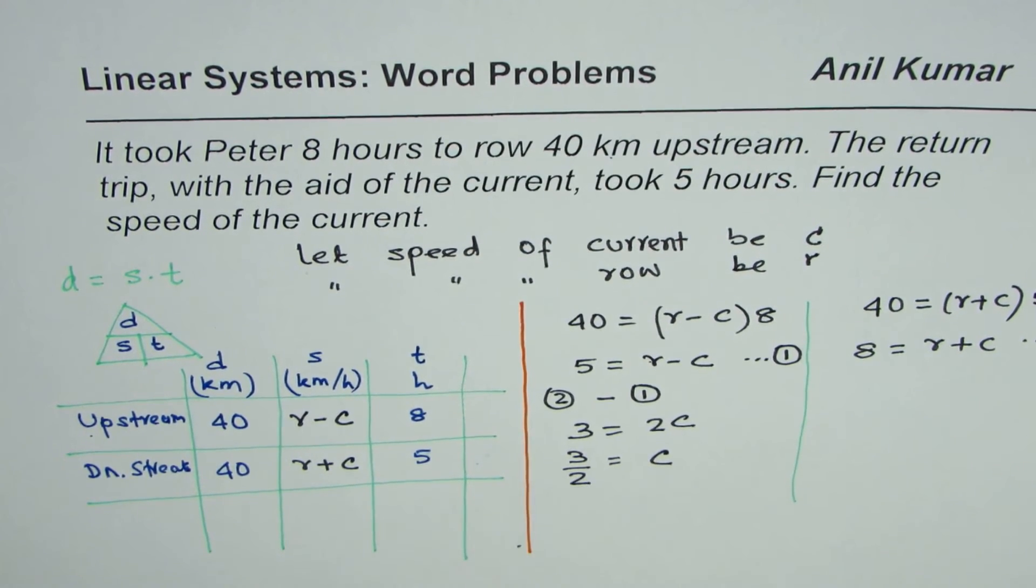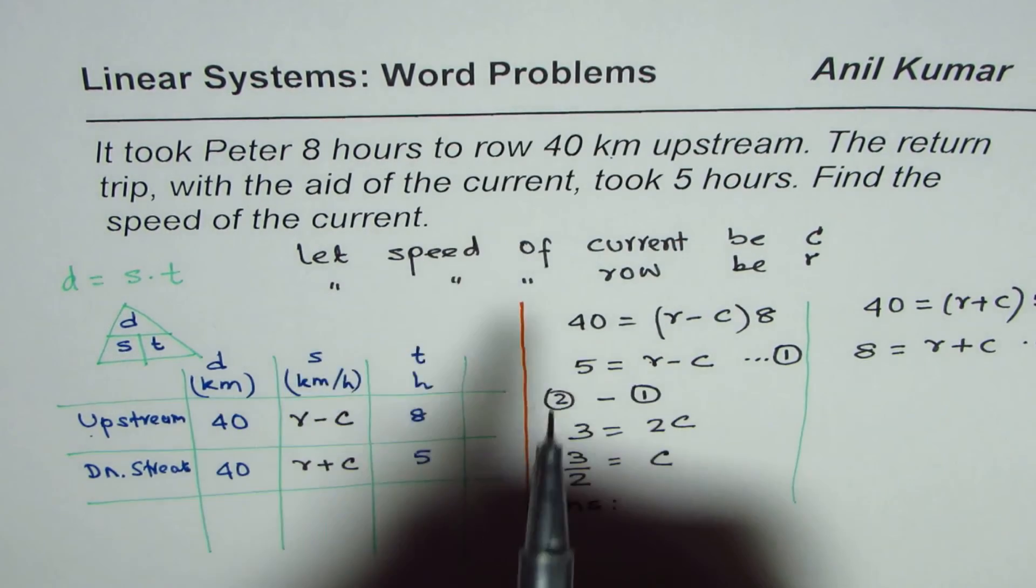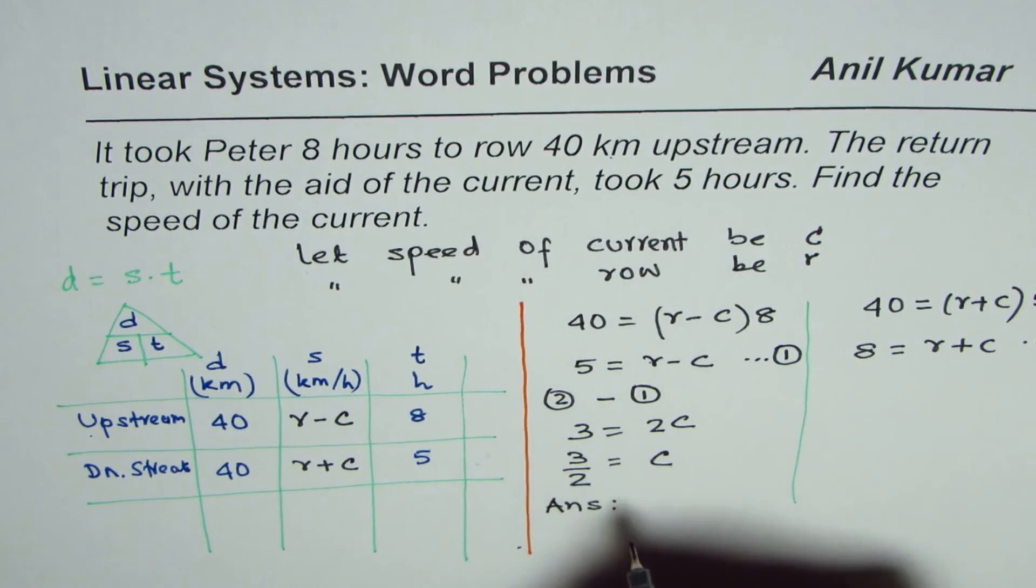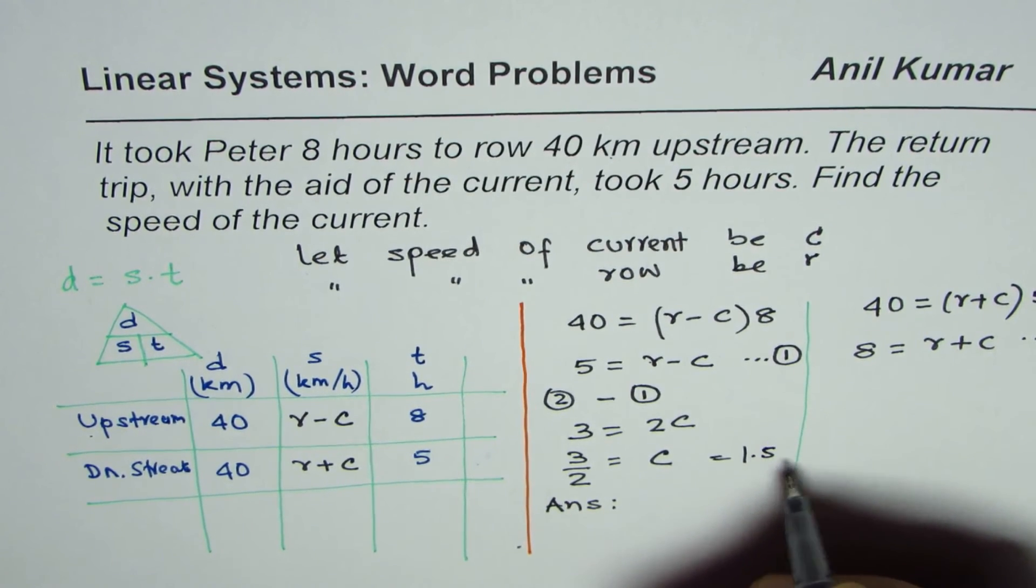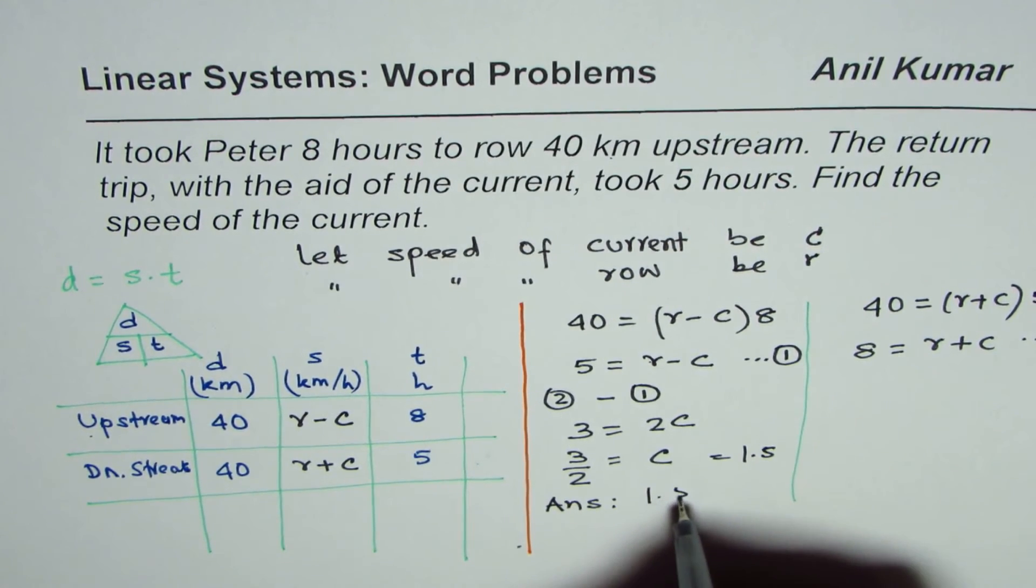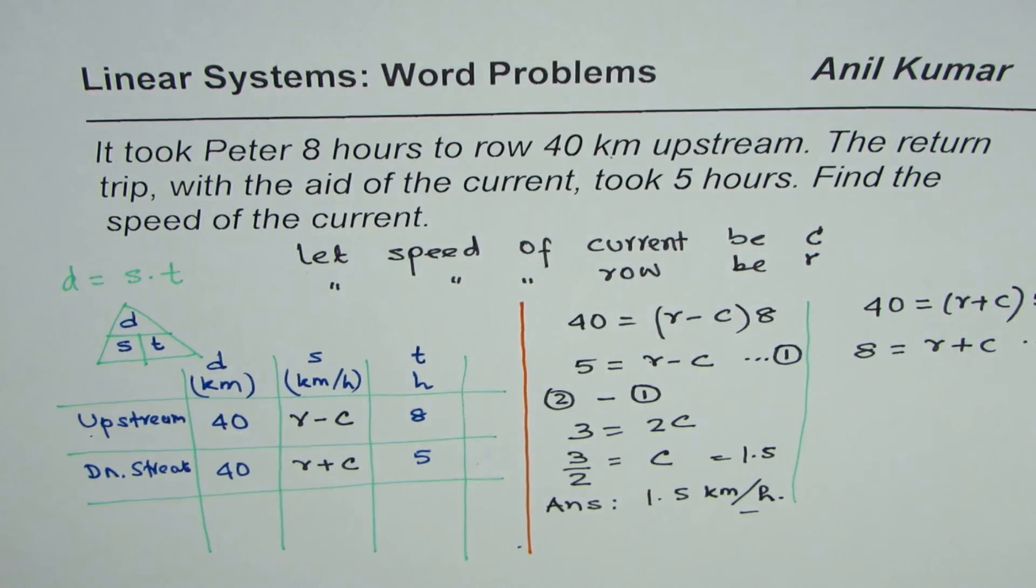And c is in kilometers per hour, so the answer is the current is of this - the current has a speed of 3 over 2 kilometers per hour, or you write this as 1.5. So it is 1.5 kilometers per hour, and that is the current for this particular case. I hope that helps.